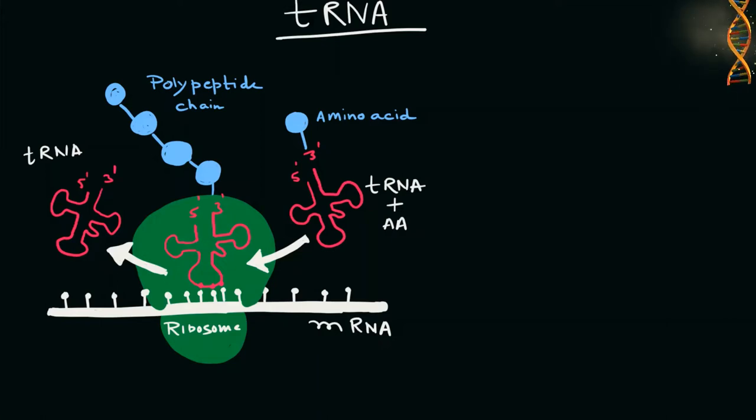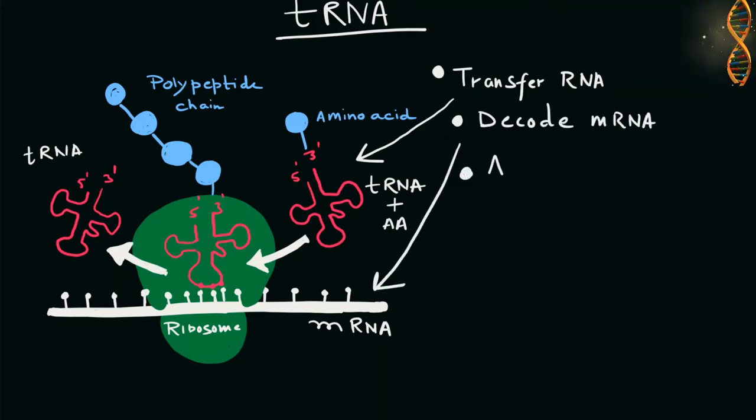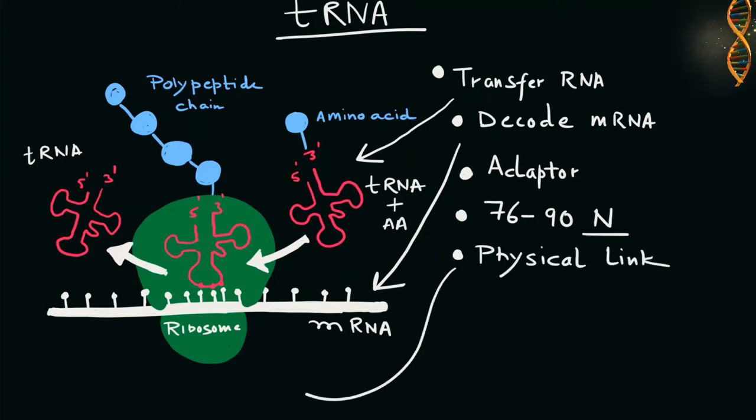Okay, let's start the lecture by understanding what is a tRNA molecule, also known as transfer RNA molecule. The transfer ribonucleic acid is a type of RNA molecule that helps decode a messenger RNA sequence into a protein sequence. tRNA is an adapter molecule composed of RNA, typically 76 to 90 nucleotides in length. It serves as a physical link between the mRNA and the amino acid sequence of the protein. tRNA does this by carrying an amino acid to the protein synthetic machinery of the cell.